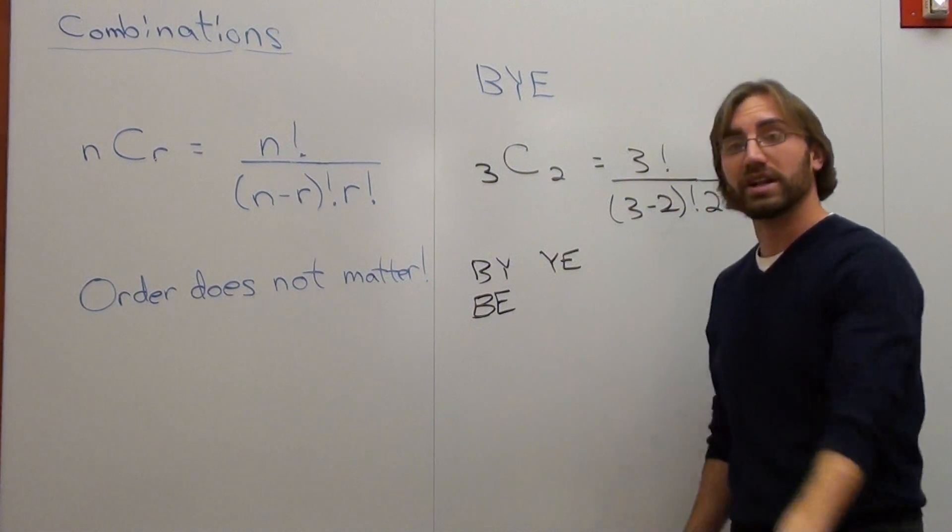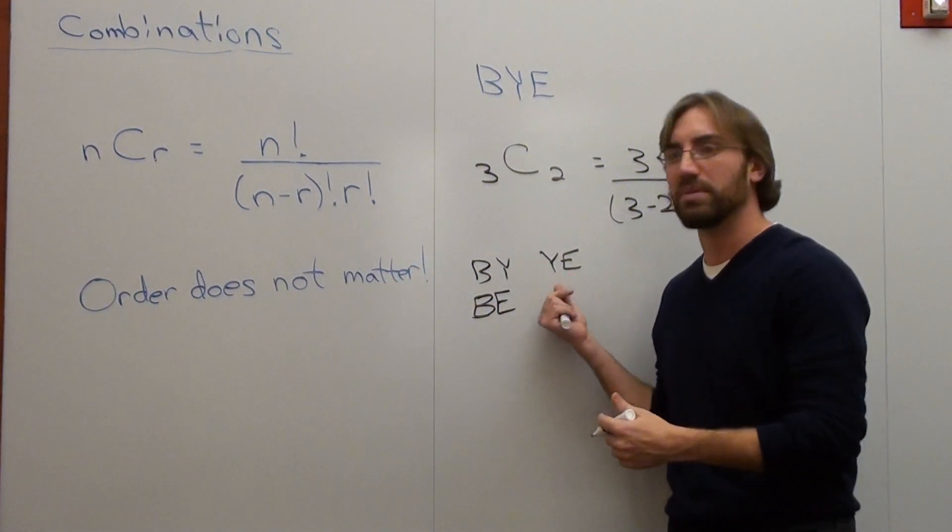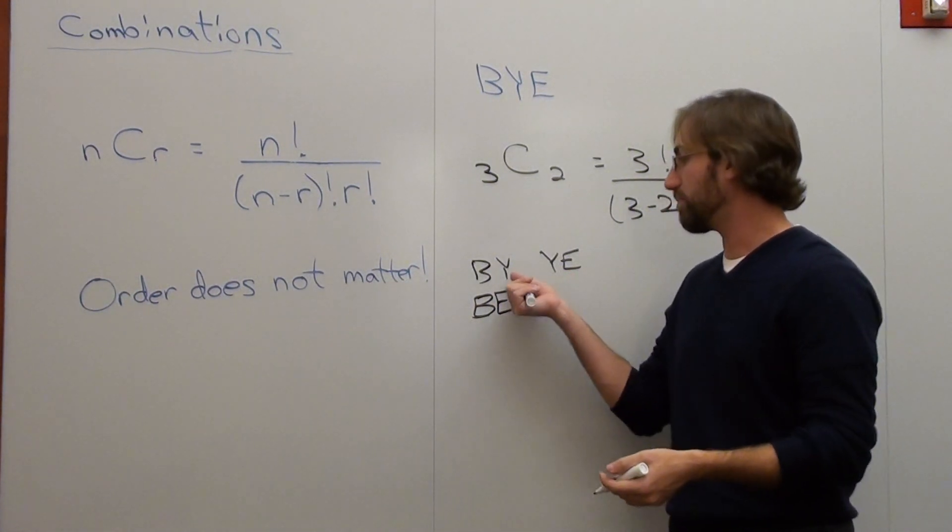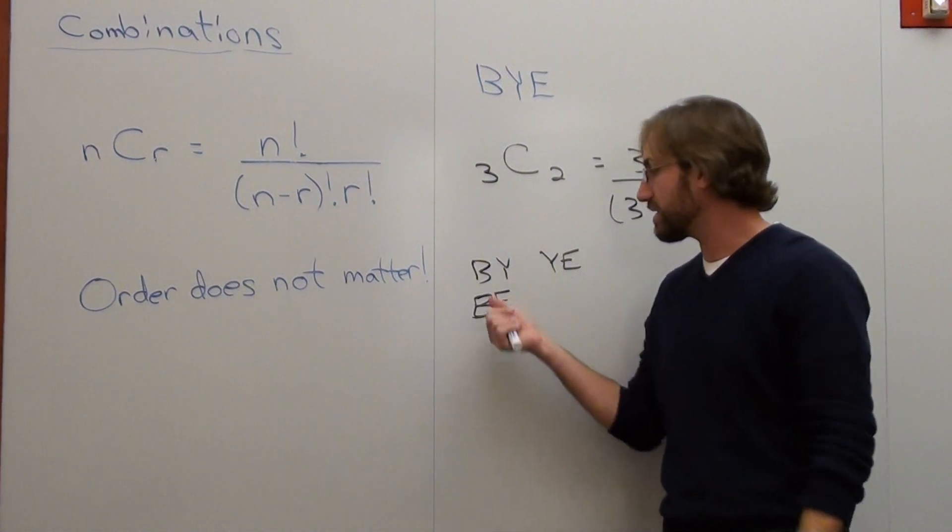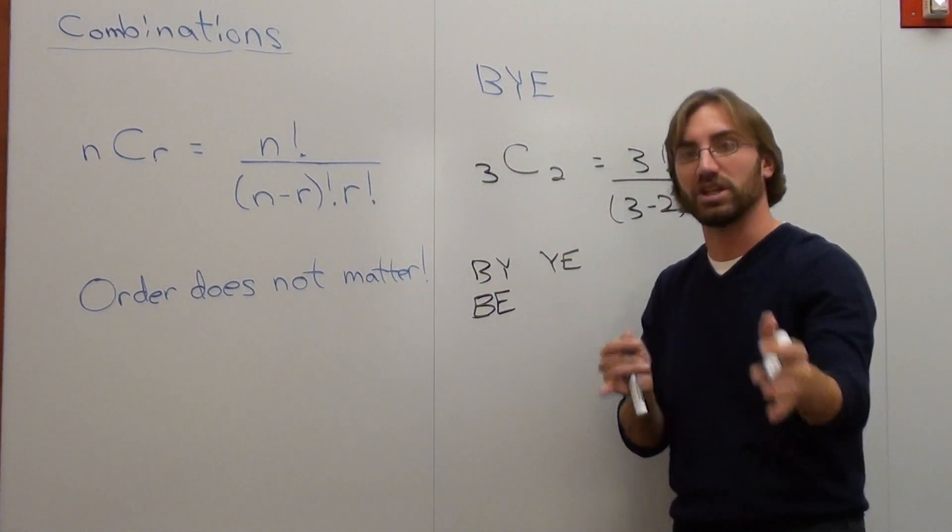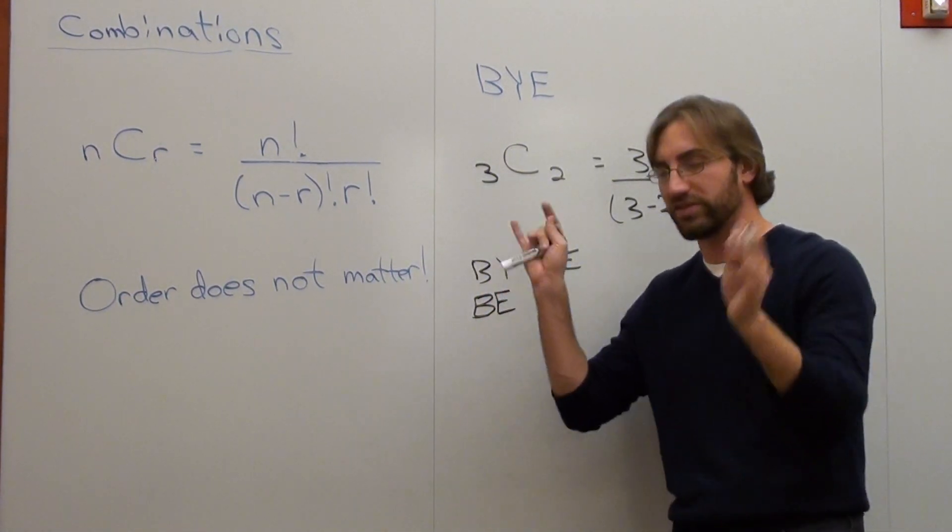Now, order doesn't matter in a combination, so you're not going to put EY because it's the same as YE. You're not going to put YB because it's not any different than BY in a combination, in a permutation unit. And you're not going to put EB for the same reason.